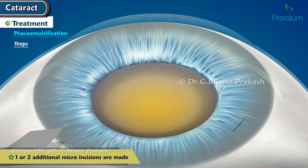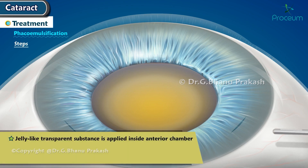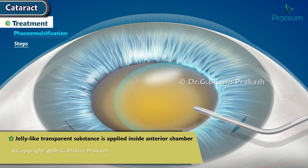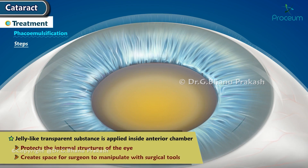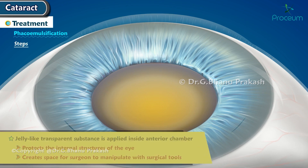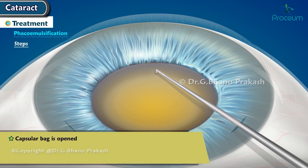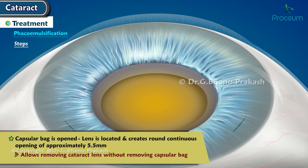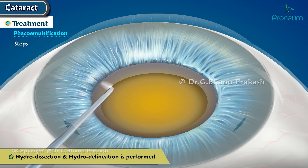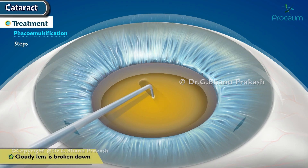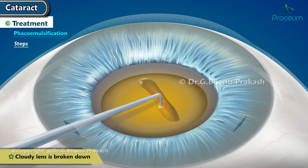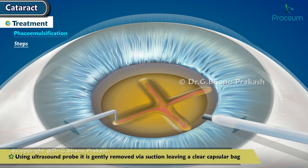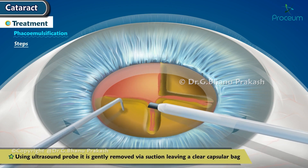Next, a jelly-like transparent substance is applied inside the anterior chamber to protect the internal structures of the eye and create space for surgical manipulation. The capsular bag is then opened carefully, creating a round continuous opening of approximately 5.5 mm, allowing removal of the cataract lens without removing the capsular bag. Hydrodissection and hydrodelineation are performed, and the cloudy lens is broken down and gently removed via ultrasound suction, leaving a clear capsular bag.